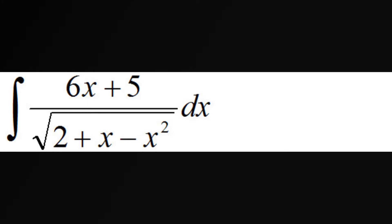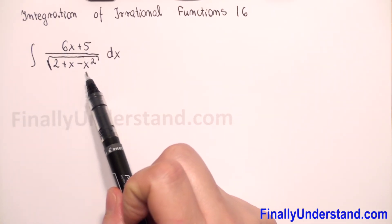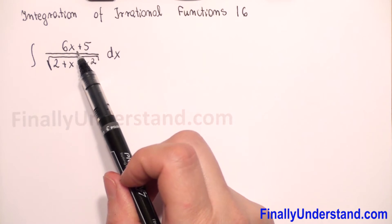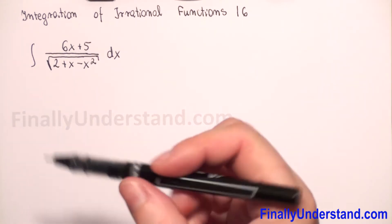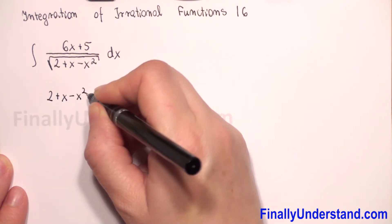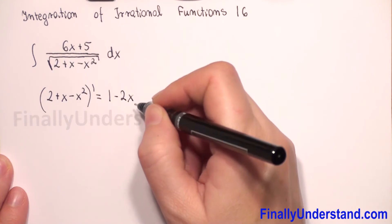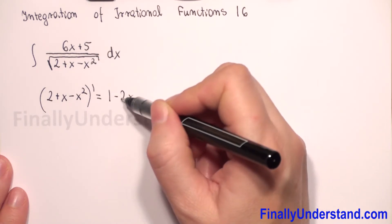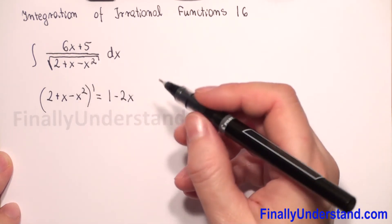In the numerator we have x to the first power and in the denominator we have a square root with x squared. We need to have in the numerator the derivative of the expression which is under the square root. So first let's calculate this derivative. We have 2 plus x minus x squared; the derivative is equal to 1 minus 2x.